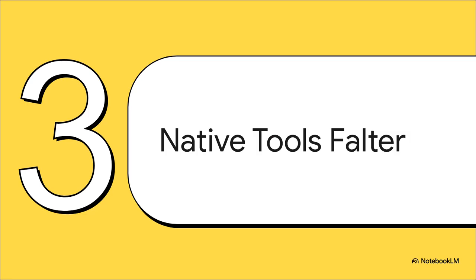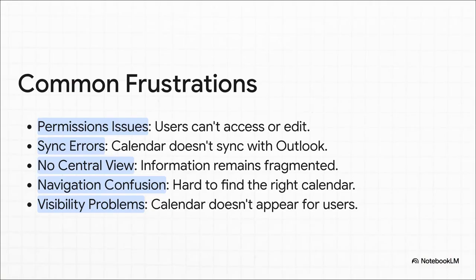Here's the honest truth: while these native tools have good intentions, they often end up causing a whole new set of frustrations — sometimes adding more chaos to the very problem they're supposed to be solving. You spend all this time setting up a calendar, and then your team members say they can't even open it. Or the calendar just refuses to sync with their Outlook, which makes it totally useless. Information is still scattered everywhere, and half the time people can't even find the calendar you worked so hard to set up.